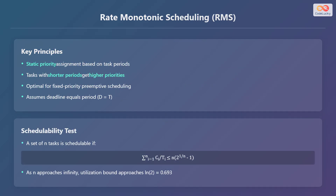Rate Monotonic Scheduling, or RMS, is a static priority assignment method where tasks with shorter periods are assigned higher priorities. This makes it optimal for fixed priority preemptive scheduling. Note that this assumes the deadline equals the period, that is, D equals T.